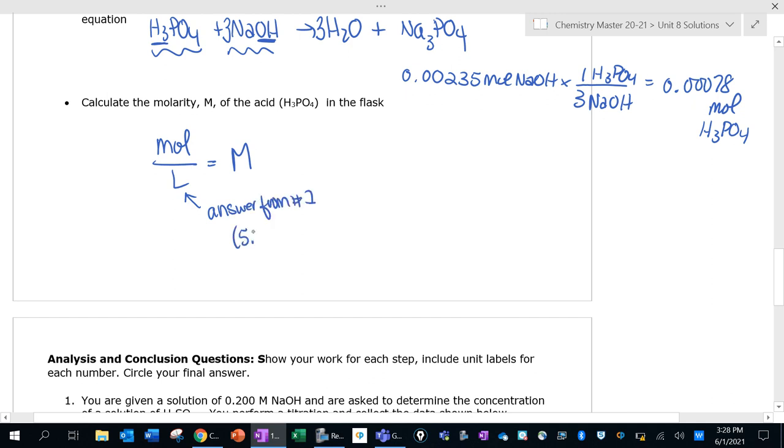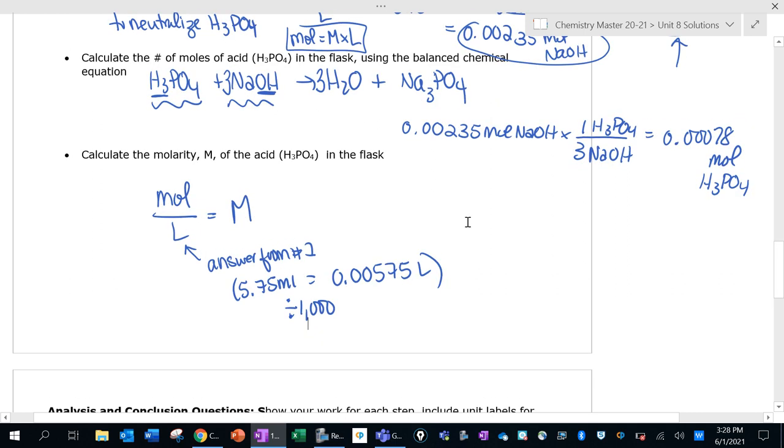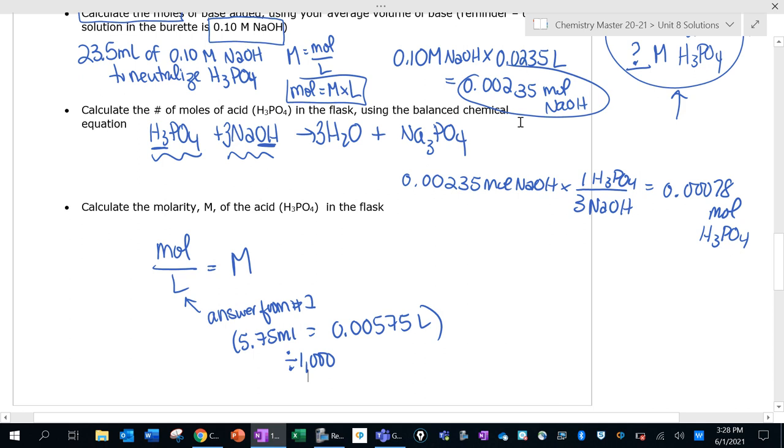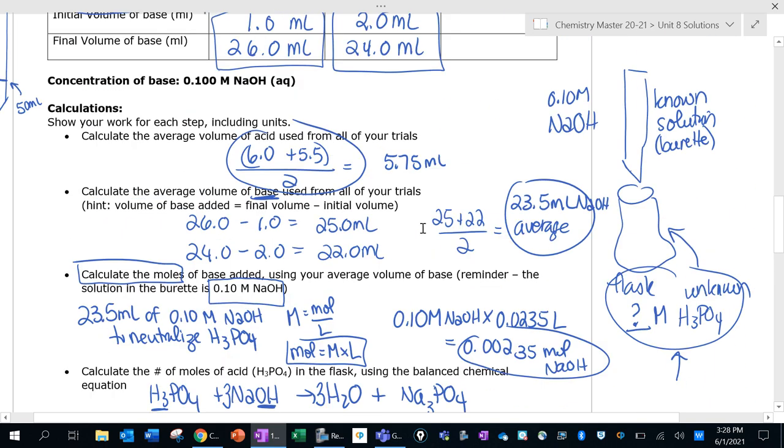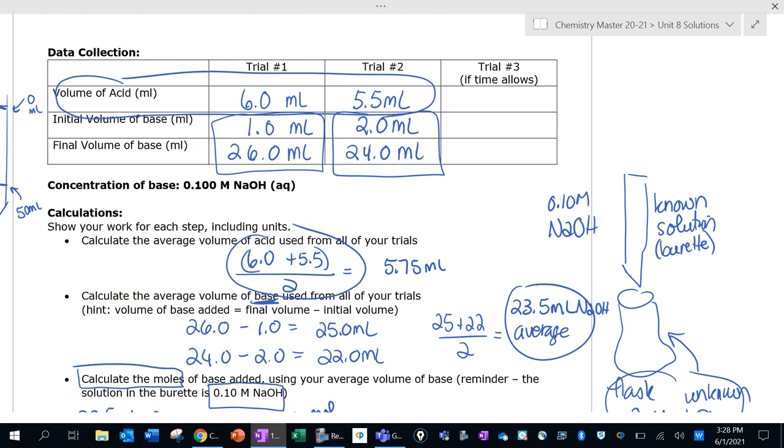Which in this case would be 5.75 milliliters, although I want to convert it into liters, right? That's what we always want to do. So remember to convert from milliliters to liters you divide by a thousand. You take your moles of acid divided by your liters of acid and that will give you molarity. And again, remember these are fake numbers that I made up. Your numbers are going to look different based on whatever your data is. This is just a model for you to look at. Please send me a message if you have questions.